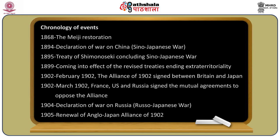A brief chronology of major events: 1868 — Meiji Restoration in Japan; 1894 — Declaration of war on China (Sino-Japanese War); 1895 — Treaty of Shimonoseki concluding the Sino-Japanese War; 1899 — Revised treaties ending extraterritoriality come into effect; February 1902 — Anglo-Japanese alliance signed; March 1902 — France and Russia sign mutual agreements to oppose the alliance; 1904 — Declaration of war on Russia; 1905 — Renewal of the Anglo-Japanese treaty; 1911 — Second renewal of the alliance.